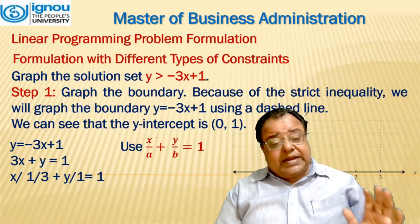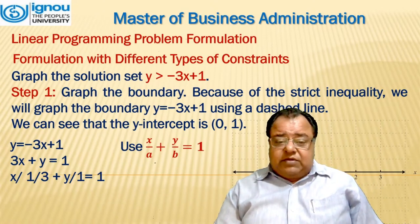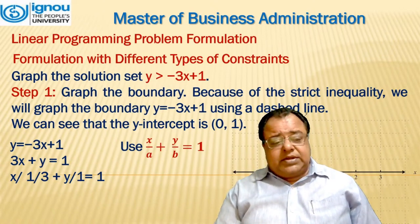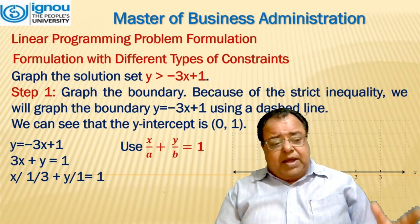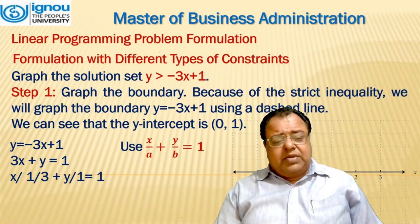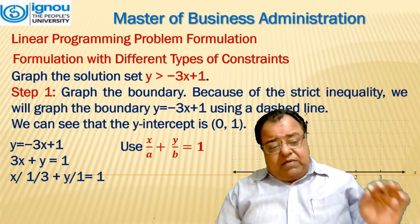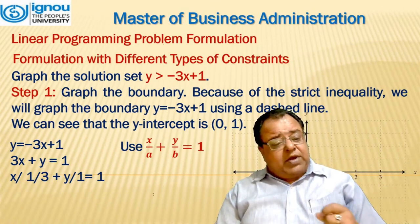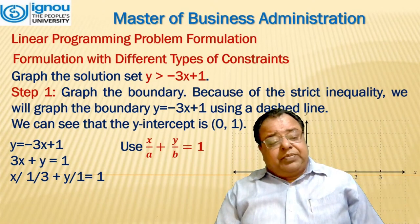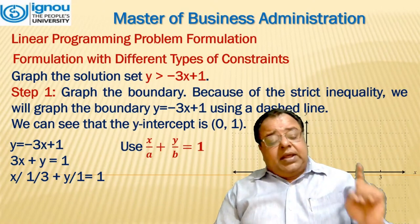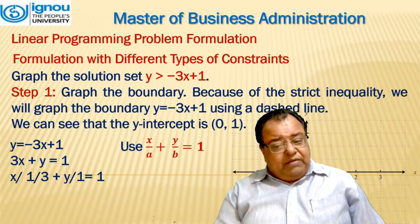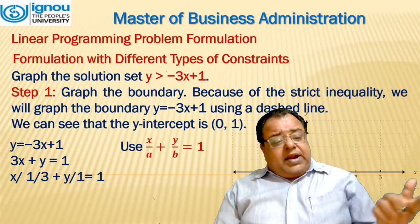The intercept form is x by a plus y by b equal to 1. Taking that equation, we remove the inequality sign and equate it, so y greater than minus 3x plus 1 becomes y equal to minus 3x plus 1. Taking 3x to the left side, we get 3x plus y equal to 1. Converting to intercept form, we bring the coefficient of x, which is 3, to the denominator, giving x over one-third plus y over 1 equal to 1. That means one-third comma 0 is the point on the x-axis where the line cuts, approximately 0.33.